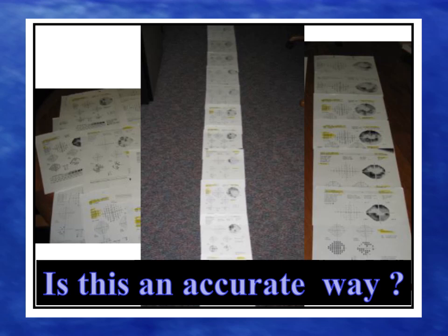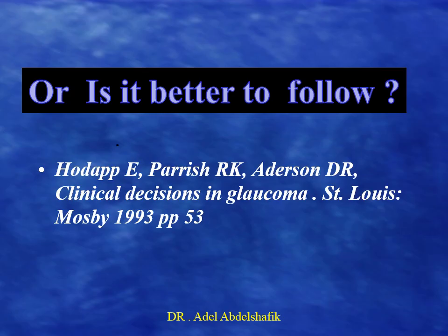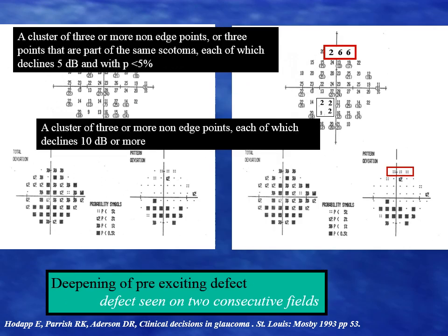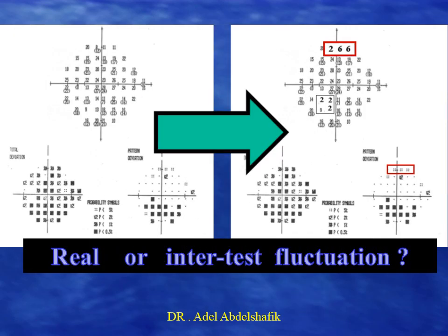Is this an accurate way, or is it better to follow systems like the one proposed by Hodick, Parish, and Anderson back in 1993? That is a more complicated system where you identify clusters and need a certain amount of change between one test and the next to confirm progression. But the question is: are these changes real, or are they intertest fluctuation?